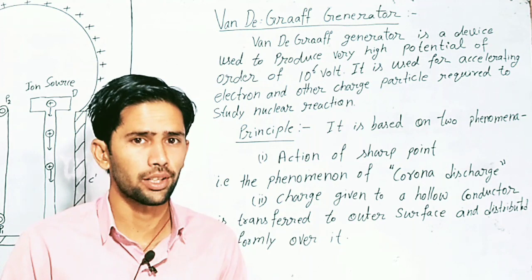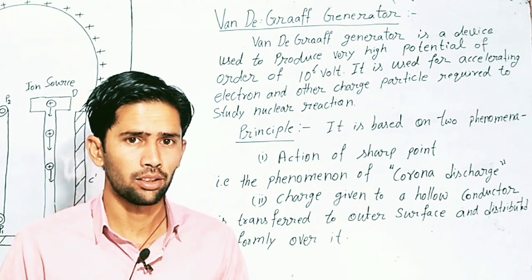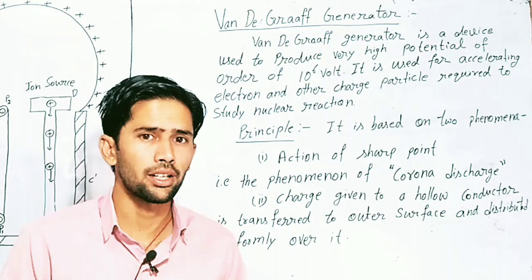If there is an electron or proton or another ion, if we accelerate it, then we can use the Van de Graaff generator to accelerate these particles.